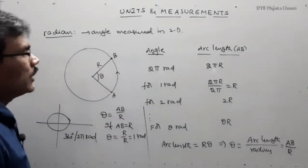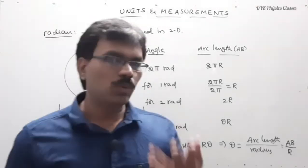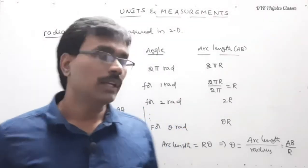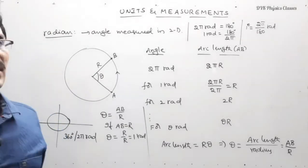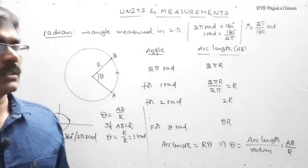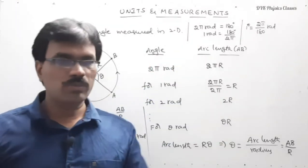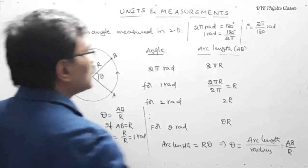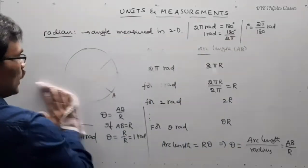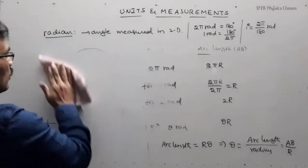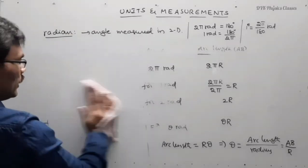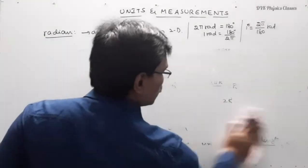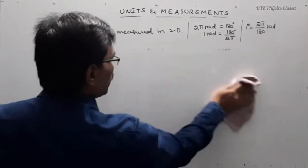This plane angle or two-dimensional angle can be expressed either in radians or in degrees. 2 pi radians equals 360 degrees. Now let us find out: express 60 degrees in radians. We know that 2 pi radians equals 360 degrees, so 60 degrees equals how many radians?